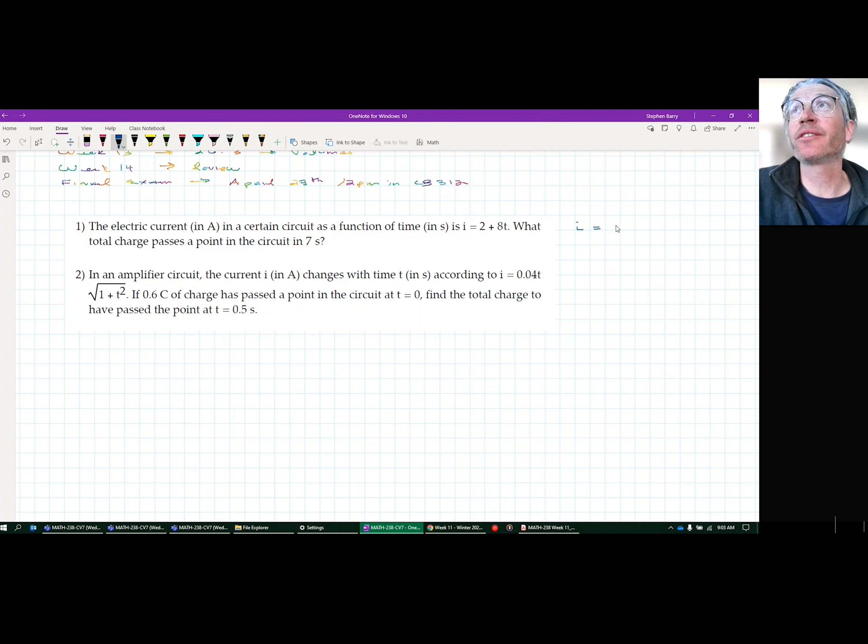They give you something. They'll say current is 2 plus 8T. Current is the change of charge over time. So once you know that the charge per unit time is the same thing as current, then you're in business.